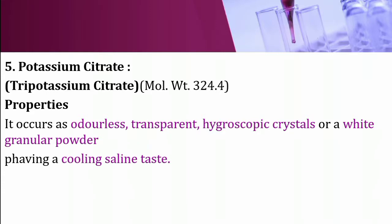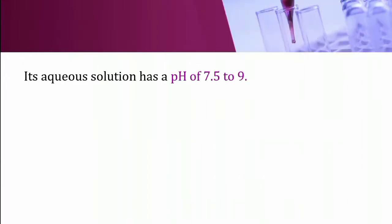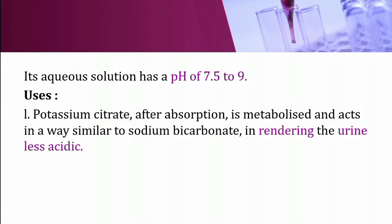Potassium citrate occurs as odorless, transparent and hygroscopic crystals or a white granular powder with a cooling saline taste. It is deliquescent in moist air, freely soluble in water, and insoluble in alcohol, chloroform and ether. Its aqueous solution has a pH of 7.5 to 9.